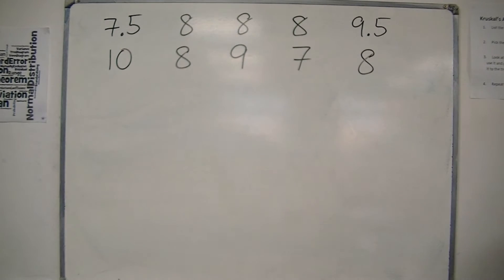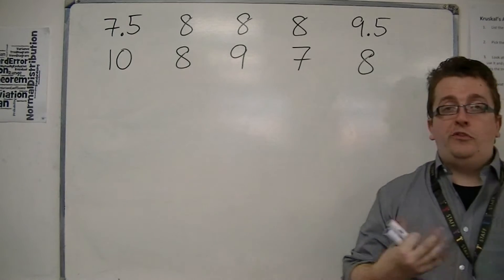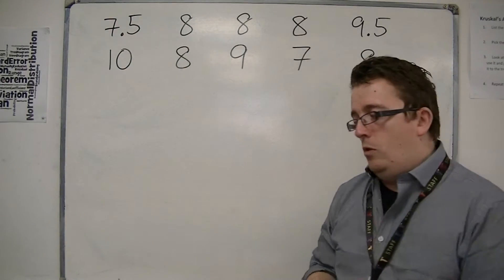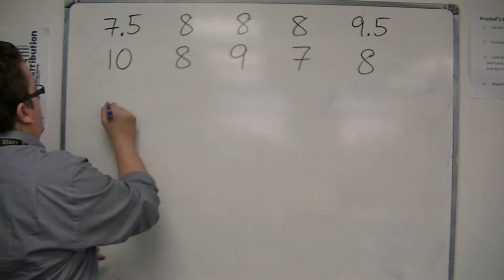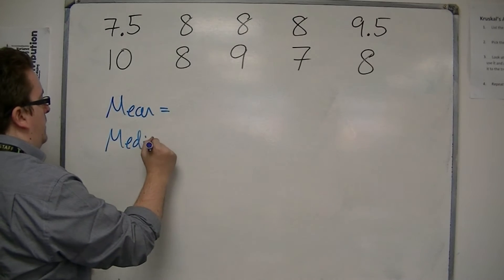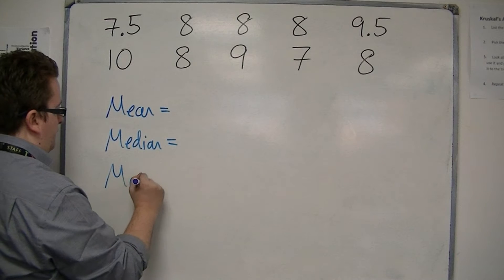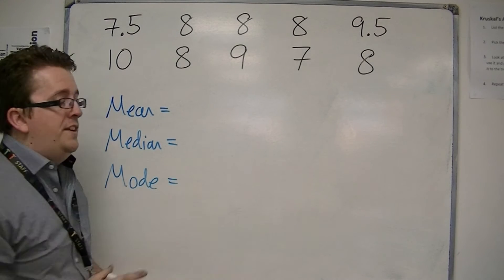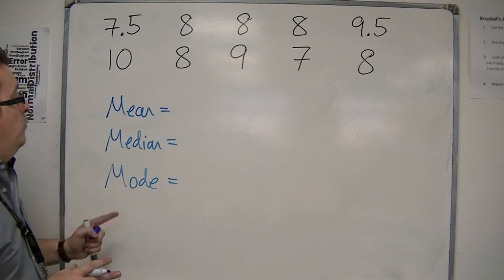So these are the last ten pairs of shoes that were sold in the shop. And what we're going to do is look at the mean, the median and the mode, and try to determine which of the three would be the best.